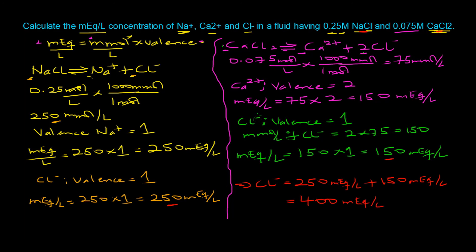To summarize: the milliequivalents per liter of sodium cation is 250, the milliequivalents per liter for calcium cation is 150, and the milliequivalents per liter for chloride ion in this solution is 400.